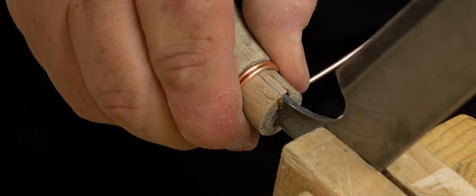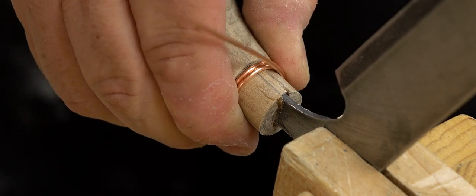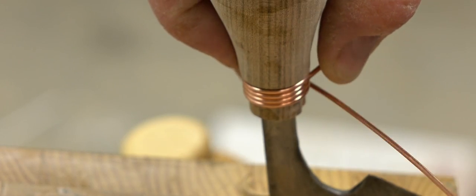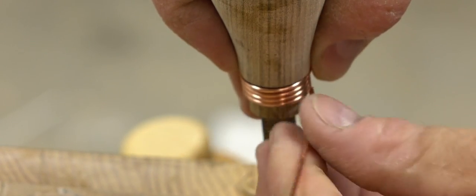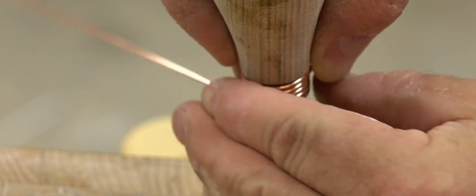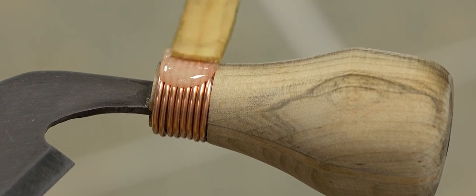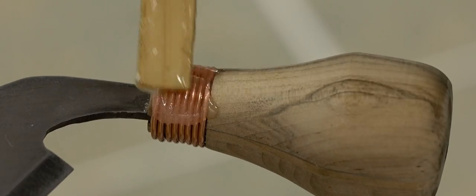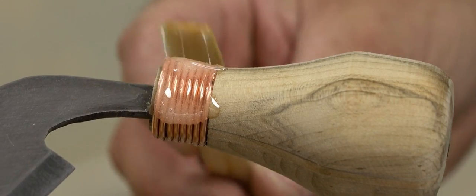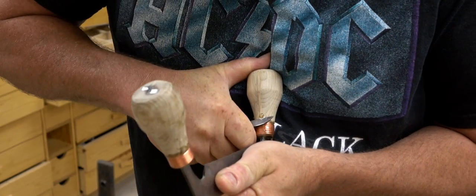This is just 14 gauge house wire that I stripped the insulation off of, and it's tricky to get it on there evenly. I really should have done the wrapping part before I put the handle on just to get the shape perfect, then I could slip it on after the handle was glued in place. Anyway, I got it done and then gave it a good coat of epoxy to fix it in place.